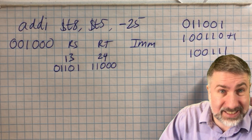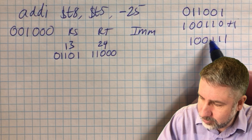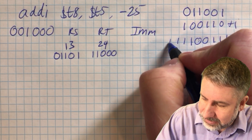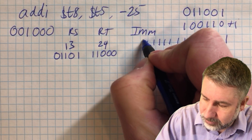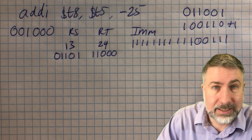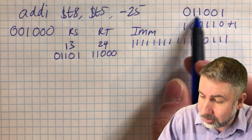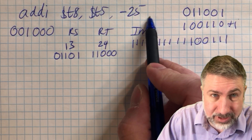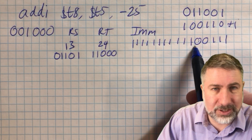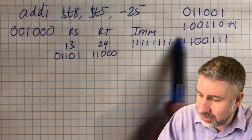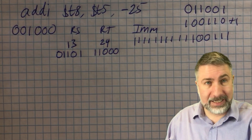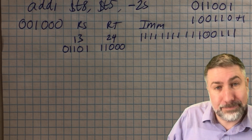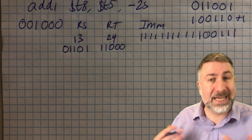We extend negative 25 out to 16 bits. Since it's negative, the sign extension fills with 1s. So it becomes 1111 1111 1110 0111 in 16 bits. That gives us our complete 32-bit instruction: the 6-bit opcode, 5-bit RS, 5-bit RT, and 16-bit immediate field. We'll then break it up into individual 4-bit pieces, where each piece represents a hex digit.